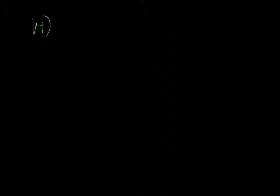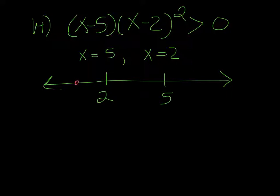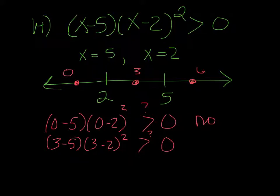Number 14. We have the inequality x minus 5 times x minus 2 squared, greater than 0. So the place where it equals 0 would be at x equals 5 and x equals 2. So we're going to plot those on a number line. And then we're going to pick test points before, after, and in between. So 0, 3, and 6. So if I put 0 in, I've got to ask myself, is that greater than 0? Well, negative times a negative squared would actually be negative, so no. Because negative 2 squared is 4, 4 times a negative 5 is negative 20, that's not greater than 0. If I put 3 in, I get negative 2 times 1. That's also negative, so no.